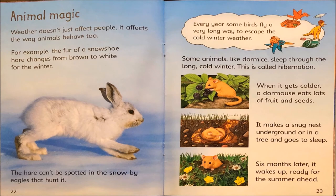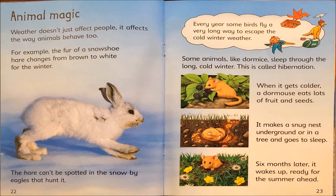Animal magic. Weather doesn't just affect people — it affects the way animals behave too. For example, the fur of a snowshoe hare changes from brown to white for the winter, so the hare can't be spotted in the snow by eagles that hunt it. Every year, some birds fly a very long way to escape the cold winter weather. Some animals, like dormice, sleep through the long cold winter — this is called hibernation. When it gets colder, a dormouse eats lots of fruit and seeds, makes a snug nest underground or in a tree, and goes to sleep. Six months later, it wakes up ready for the summer ahead.